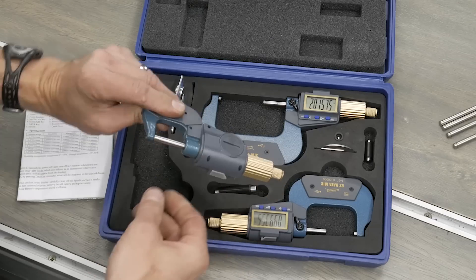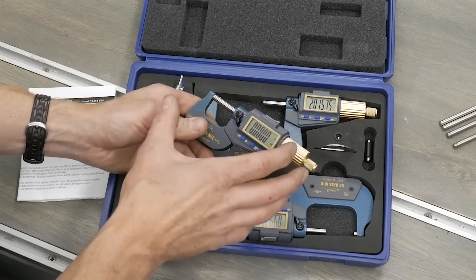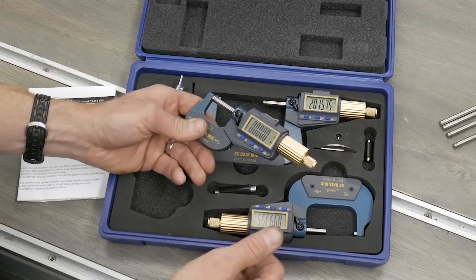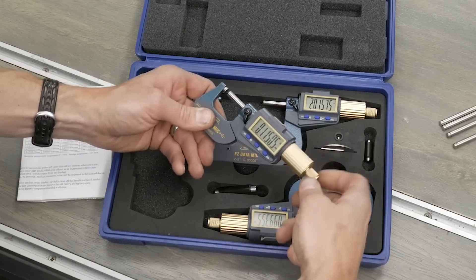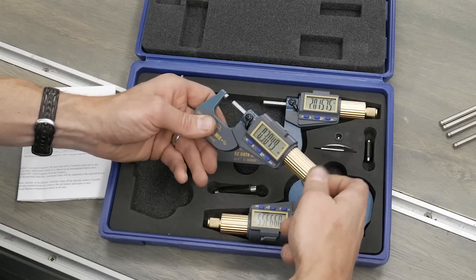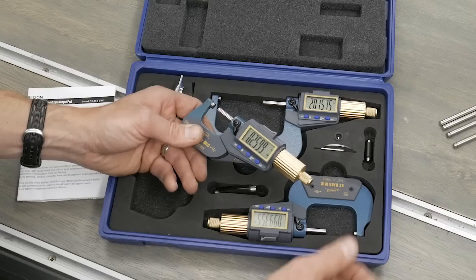So they've got an insulated frame, which is good. Keeps heat from transferring from your hand and altering the measurements based on thermal expansion, that kind of thing. And then you can do kind of a rapid traversal to open and close the measurement range with the knurled knob, which does not have the click clutch on it.